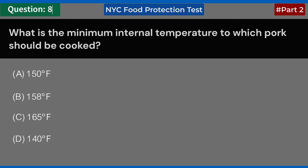What is the minimum internal temperature to which pork should be cooked? A. 150 degrees Fahrenheit. B. 158 degrees Fahrenheit. C. 165 degrees Fahrenheit. D. 140 degrees Fahrenheit. Answer: A. 150 degrees Fahrenheit.